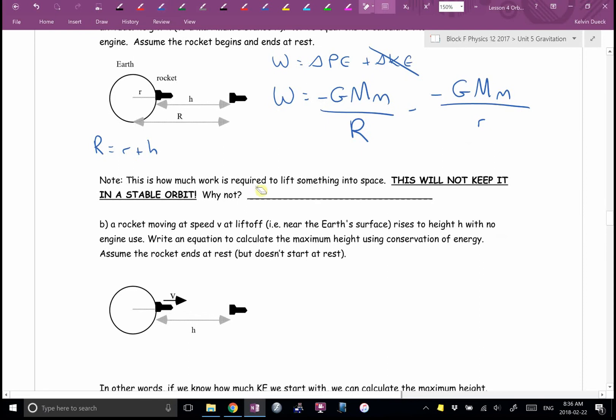I wrote here, this is how much work required just to lift something into space. Why won't this keep it on a stable orbit? Why do you have to have KE to stay in a stable orbit? Because otherwise, because you are in free fall, what we do is we give you enough kinetic energy to give you just the right orbital speed so that you're moving tangent to the radius, and even though you're in free fall, you're never getting any closer to the Earth.